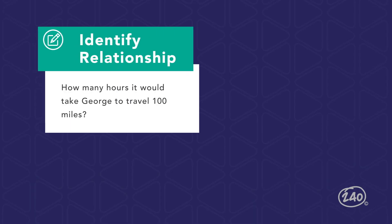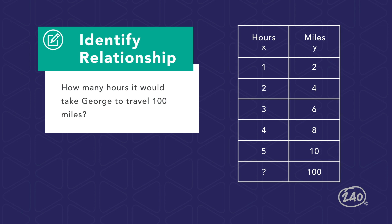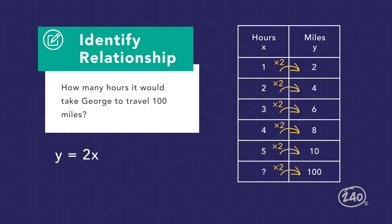If you are not comfortable writing equations in slope-intercept form from a graph, another way is to put the given ordered pairs from the line in a table and identify the relationship between x and y. You can clearly see that to get the number of miles y, you multiply the hours x by 2. In other words, y equals 2x.